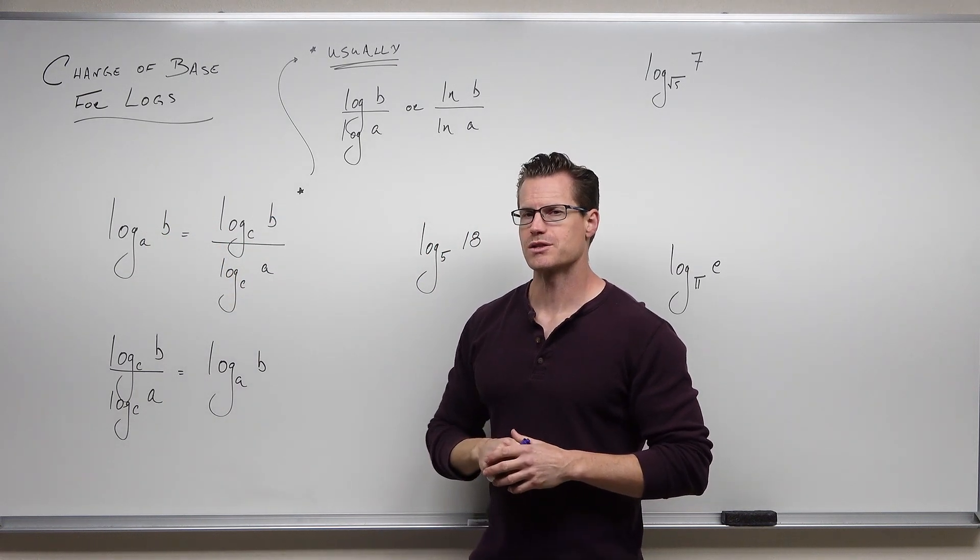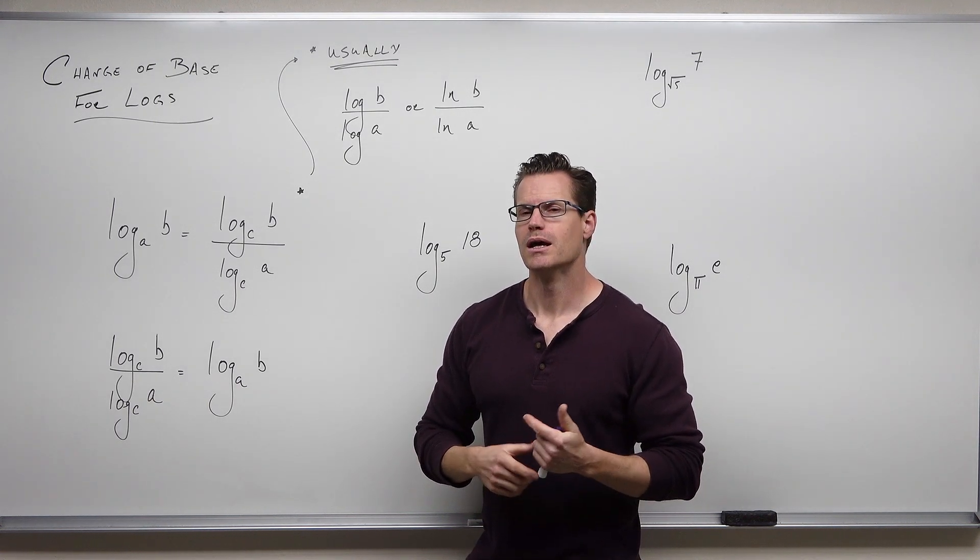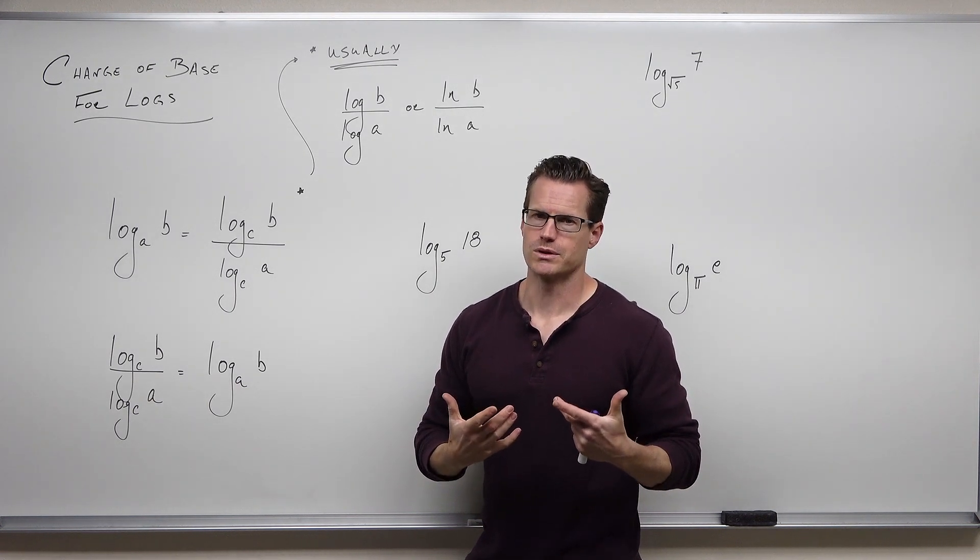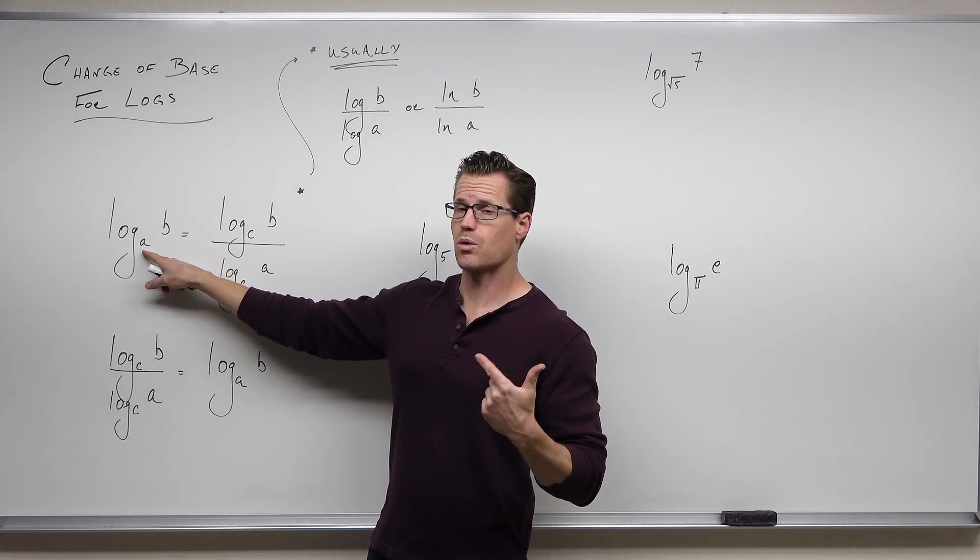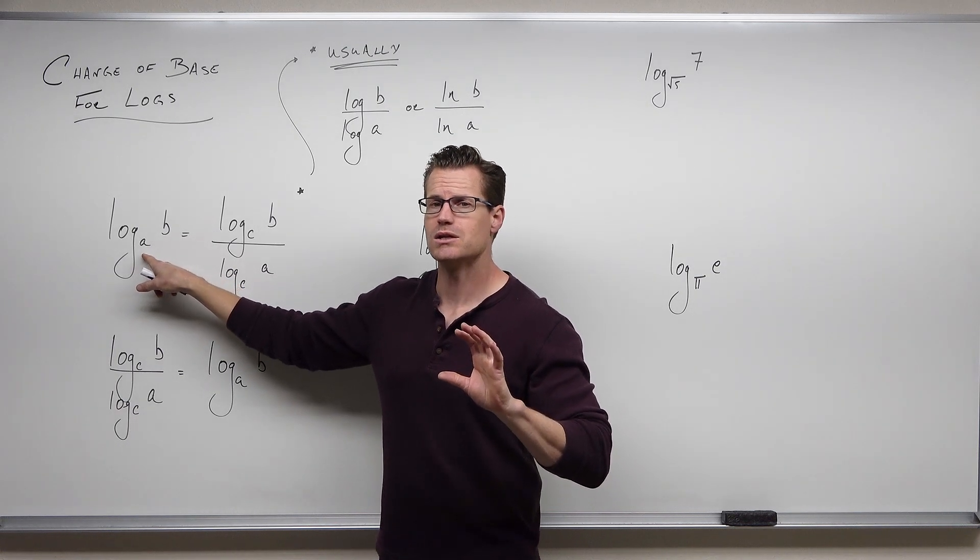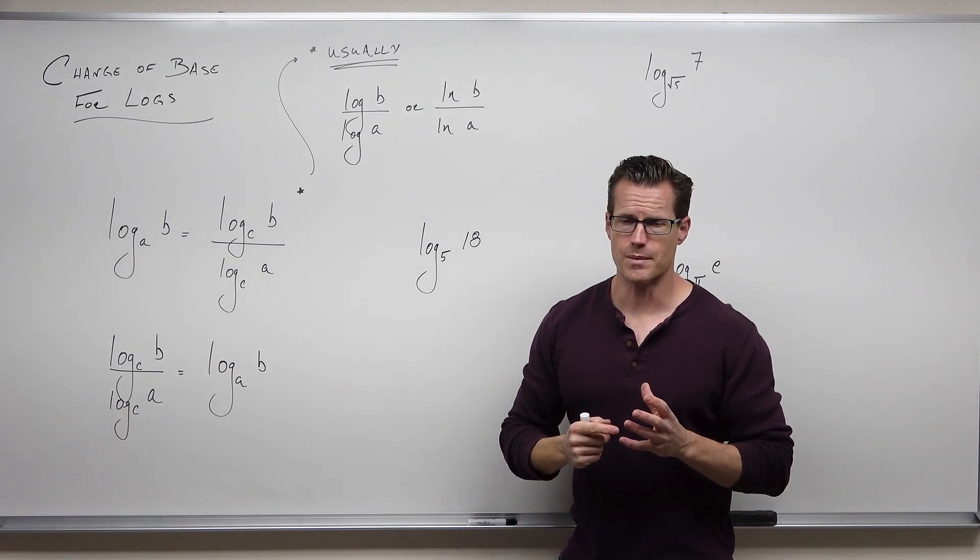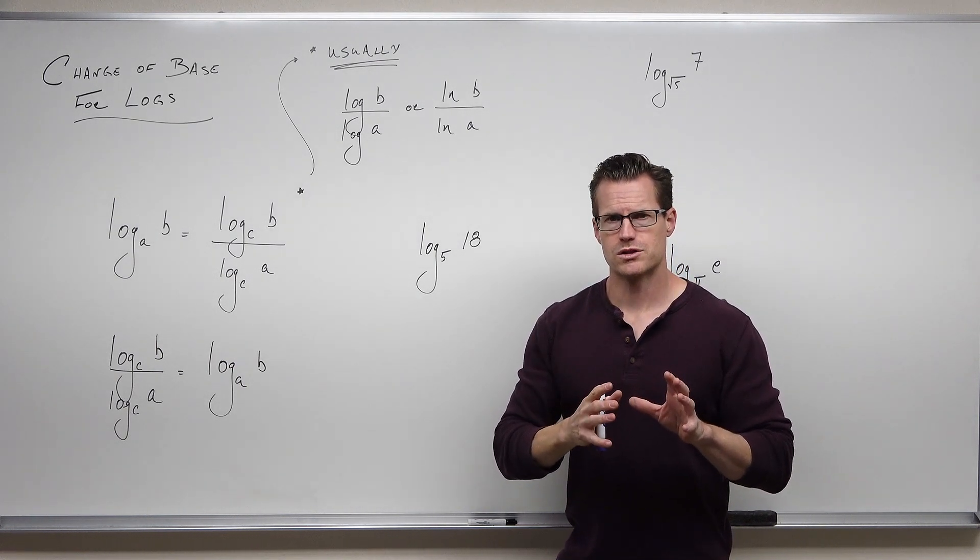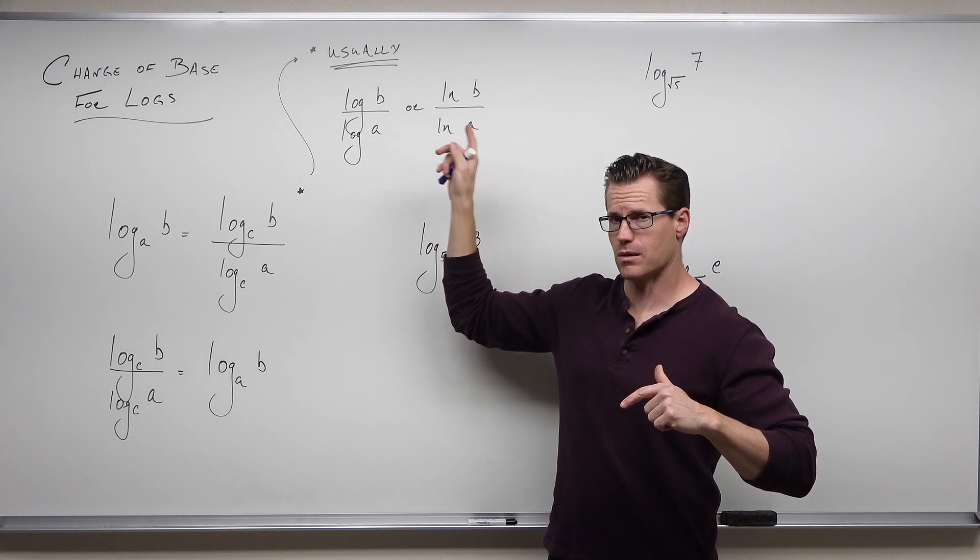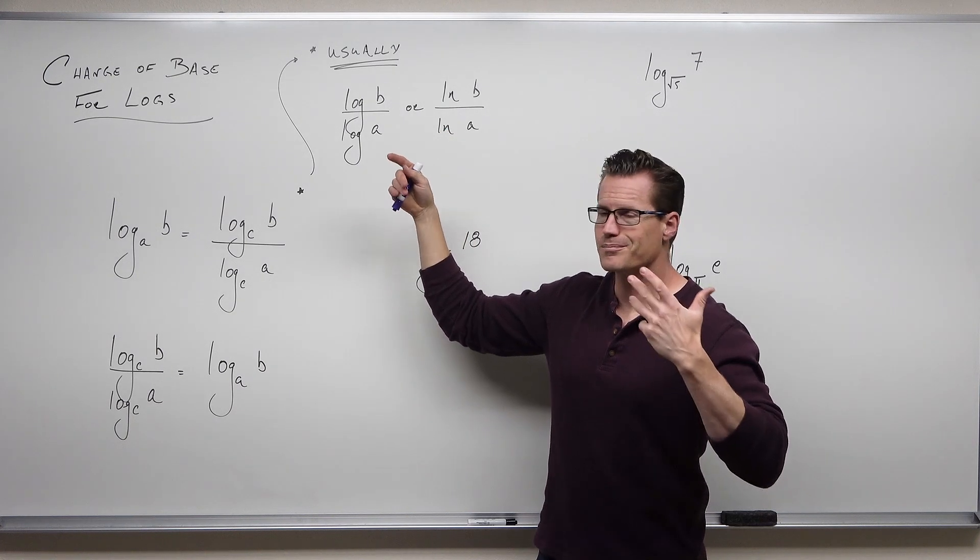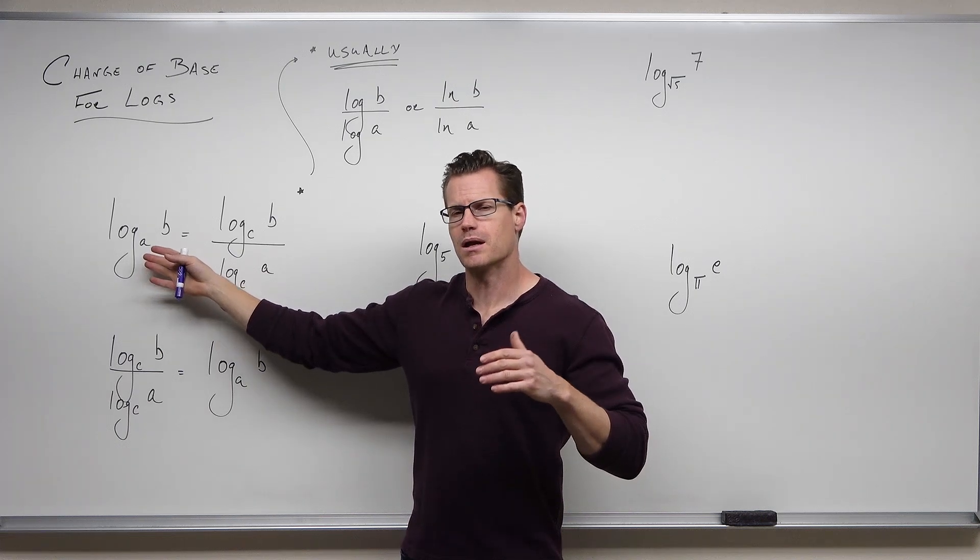Typically, what do you want for your base? You're probably not going to change a base of three into a base of square root of 11 because that'd be really difficult to use and work with. Normally, we're changing our base into a log base 10, common log, or a log base E, natural log. That is by far the most common. Why? Your calculators, almost all of them, have the ability to plug in log base 10 and log base E, but not necessarily a lot of the bases.